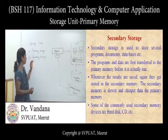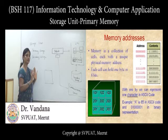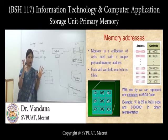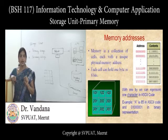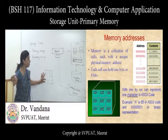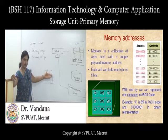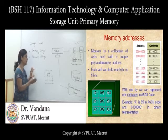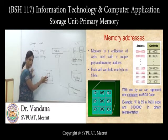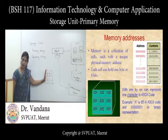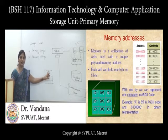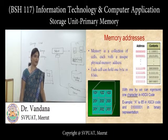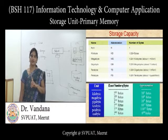Regardless of whether it is primary or secondary, memory can be considered a block of space divided into a number of cells. Memory is a collection of cells, and each cell has a unique address to identify it so it can be directly accessed. In a single cell, generally a single character is stored — meaning a single byte is stored, and one character equals one byte.